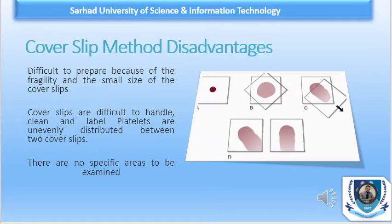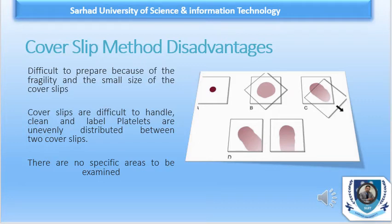The disadvantages of the cover slip method are: first, it is difficult to prepare because of its fragility and small size; second, cover slips are difficult to handle, clean, and label; third, platelets are unevenly distributed between two cover slips; and fourth, there are non-specific areas to be examined. That is why the cover slip is not the best technique for microscopy of a peripheral smear.